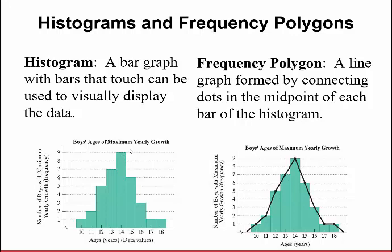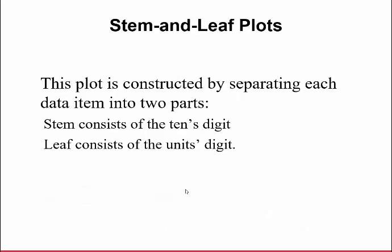What a frequency polygon does is this is a line graph formed by connecting dots in the midpoint of each bar of the histogram. So all this does is put a line in the midpoint of each of these bars to show the data. These histograms are very common in the real world and you've actually probably seen them before.